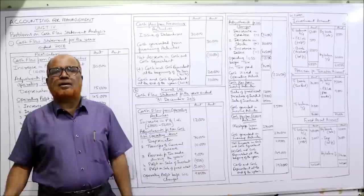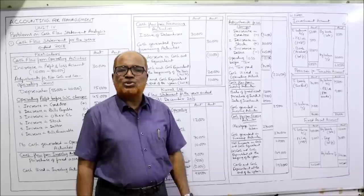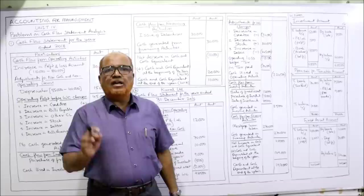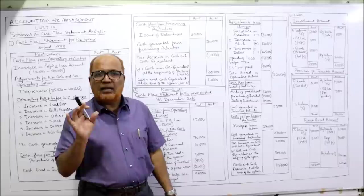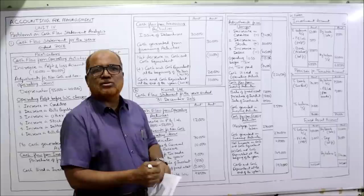This problem is a little bit more complicated compared to the previous one because some adjustments are given. First make the format of the cash flow statement. In working notes we will make three accounts: investment account, provision for taxation account, and fixed asset account. For the investment account — investment is an asset and assets show debit balance. Take opening balance of investment: 50,000, closing balance: 60,000. Debit side: opening balance brought down 50,000.